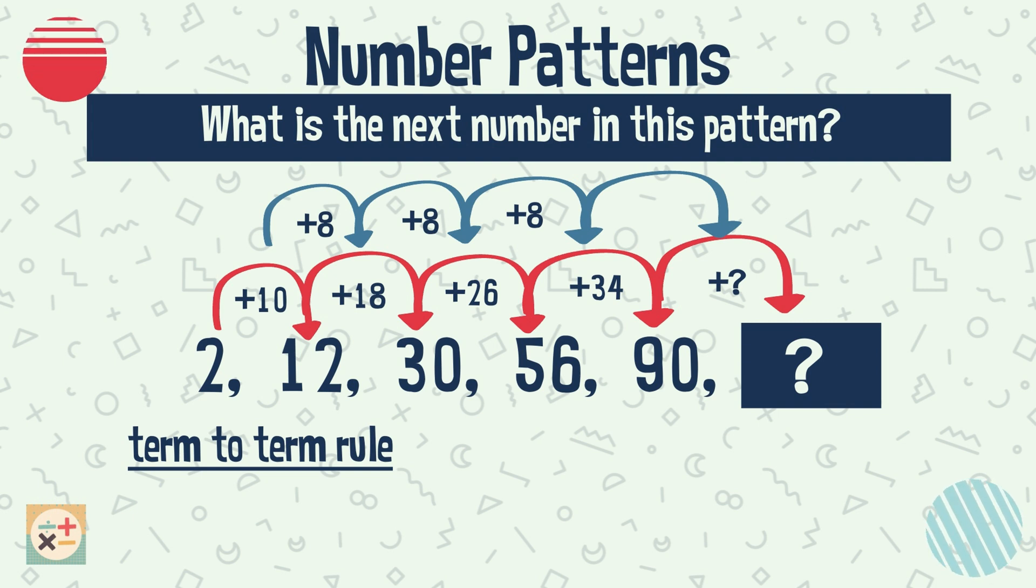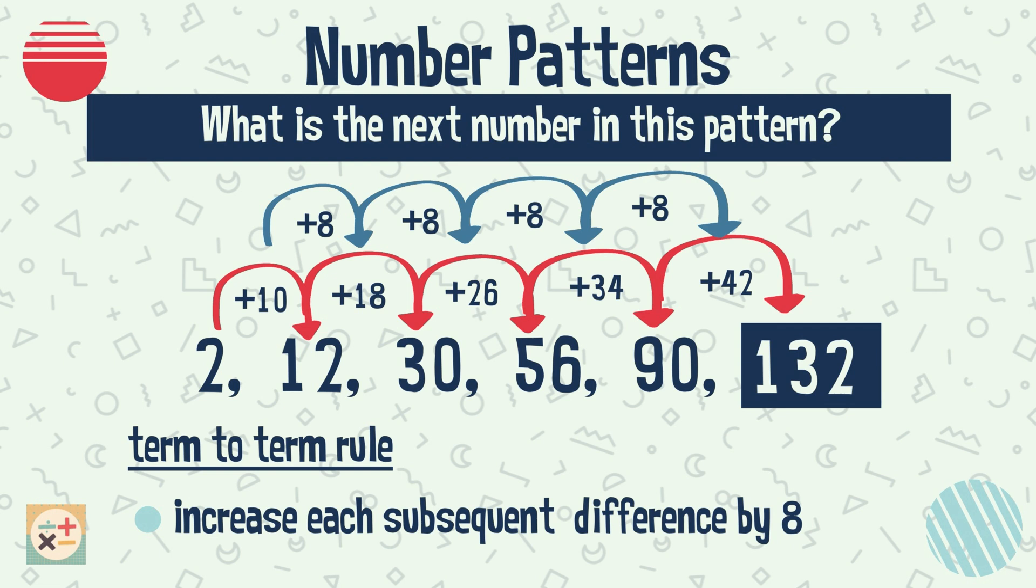We can therefore add 8 to this difference, giving us 42. So if we add 42 to 90, we get 132, the missing number in the sequence. So the term to term rule for this number pattern is that the difference between the terms increases by 8 each time.